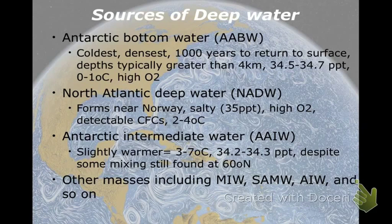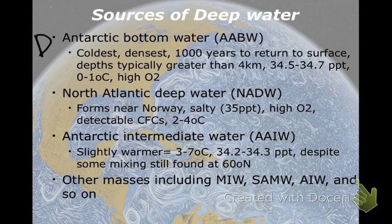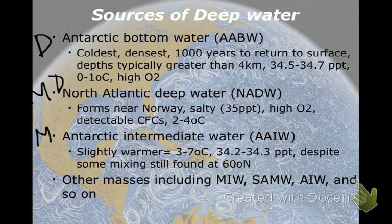The Antarctic Intermediate Water is slightly — and I do mean slightly — warmer. There's some overlap. It's about three to seven degrees Celsius. But what it is, is fresher — almost a full PPT fresher than North Atlantic Deep Water. On the diagram, the deepest is Antarctic Bottom Water, then North Atlantic Deep Water above it in the Atlantic, and Antarctic Intermediate Water in the middle area. Antarctic Intermediate Water is very persistent — it forms in the Antarctic and moves northward slowly. If you go to 60 degrees north of the equator, in the North Atlantic, you can still find traces of it.